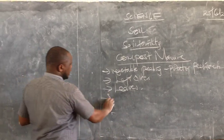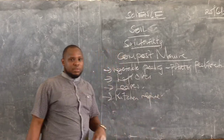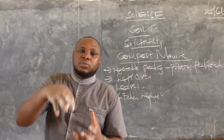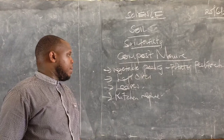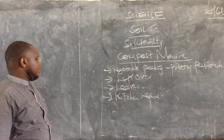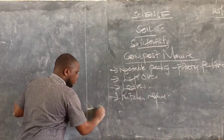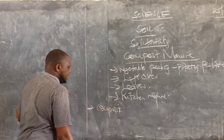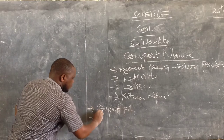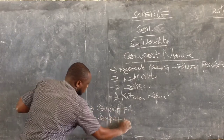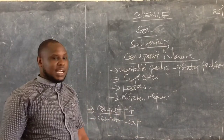Then we have what we call kitchen refuse. If you have cooked and washed your sufuria, what comes from there is kitchen refuse — you can use this in the compost manure. As I told you last time, we have two ways of preparing the compost manure. We have what we call a compost pit. Most of the time in the exam, they ask about the compost pit, and that is what I am going to discuss today.